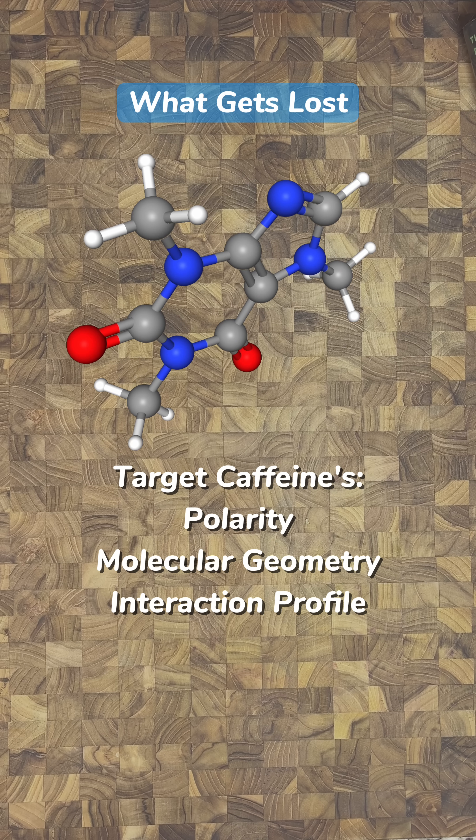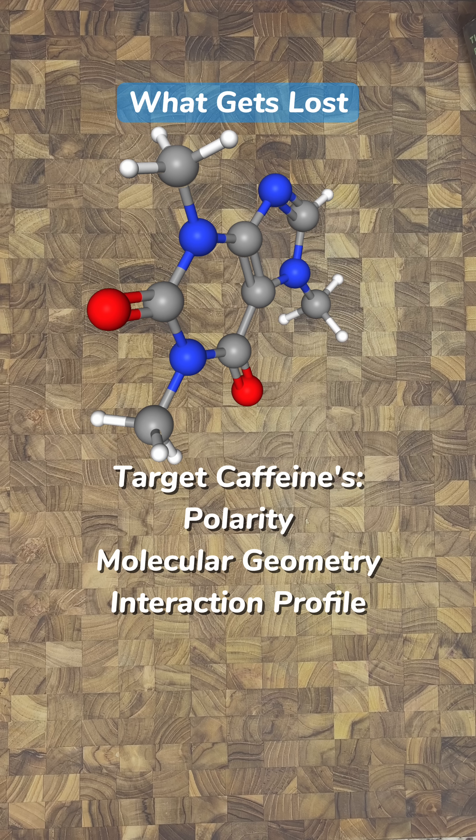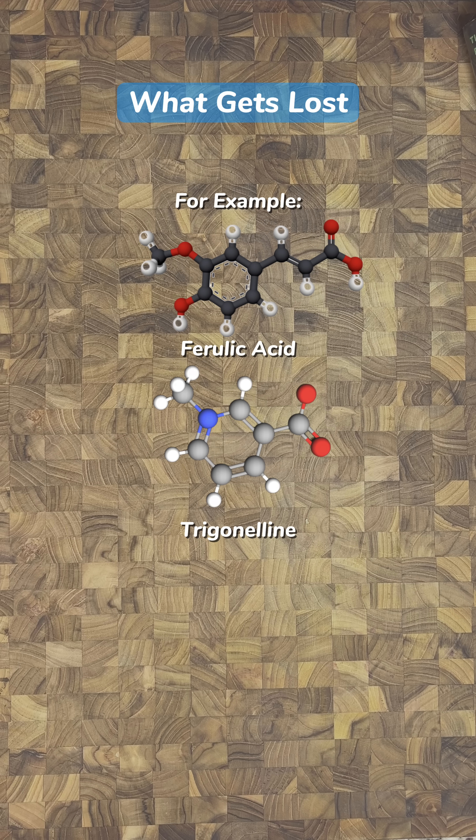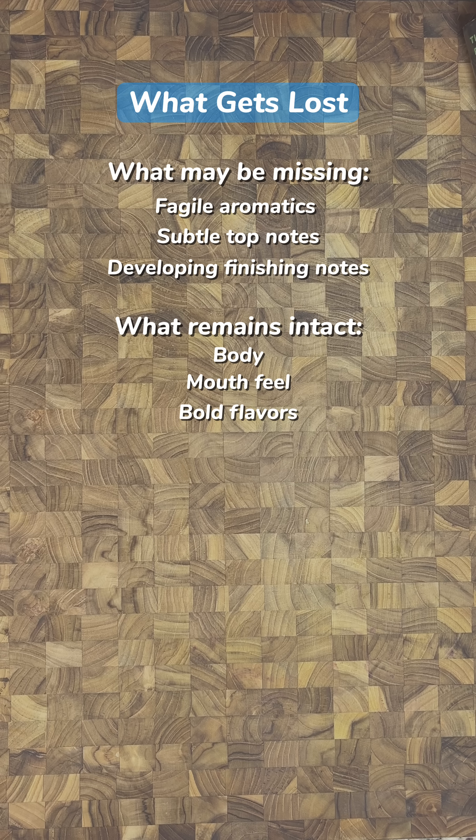All of these processes rely on the geometry and polarity of the caffeine molecules to target its extraction, so some similar molecules can also get lost. These tend to be volatile aromatics and effervescent top notes. The compounds that provide the mouthfeel, the body, and the major flavors are basically all left intact.